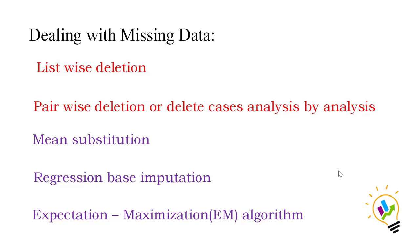The third method is Mean Substitution. The system calculates the mean of the variable and substitutes that mean value wherever there is missing data. This is also a simple method — the system only calculates the variable mean and substitutes it in place of the missing values.